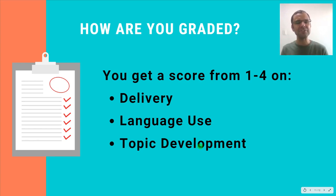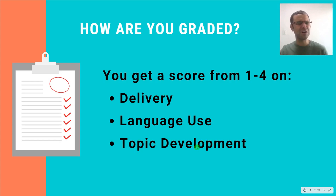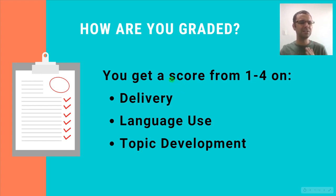Each of these has equal value and they are scored in isolation, but of course there's going to be some overlap. If your delivery is very poor, it might be hard for the grader to understand your topic development. Likewise, if your language use is quite poor, you might have some topic development problems. So nothing is totally in isolation. Delivery refers to how well you speak — how easily the grader can understand what you're saying. If the grader needs to use extra effort to understand your accent, or if there are a lot of long pauses and your speech is very choppy, you're going to get a lower delivery score.